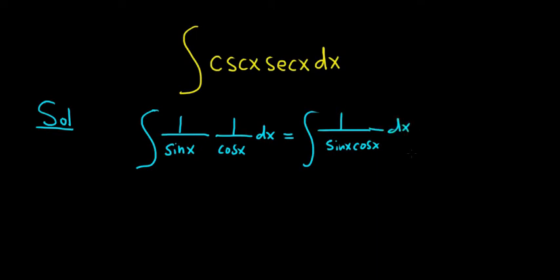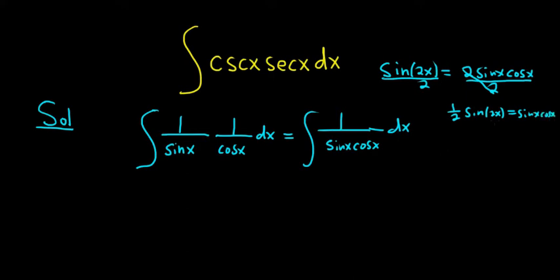And there is an identity that this reminds you of. If you know that the sine of 2x, well, that's equal to 2 sine x times the cosine of x, you can rewrite the bottom using this. So we can divide both sides by 2. So that gives us 1 half sine 2x equals sine x cosine x. So that was my idea, to use this identity and go from there.